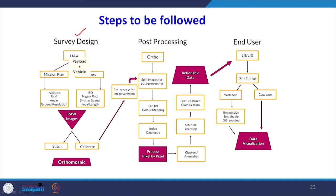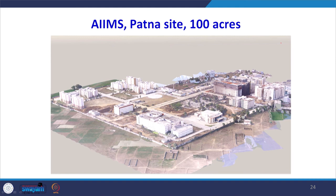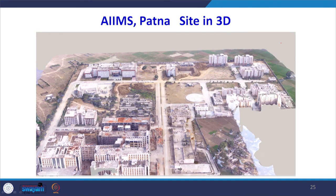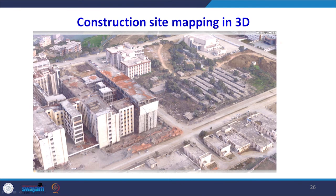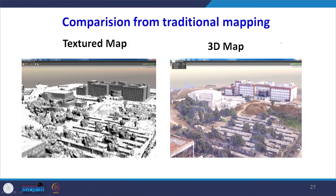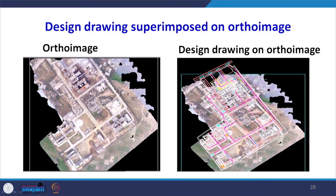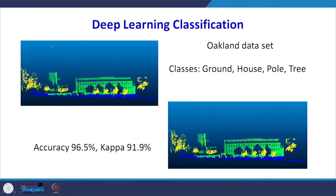The steps involved include survey and design, post-processing data, and data visualization. As an example from the Ames Patna site, a very large area has been scanned in 3D, a 3D model has been created from point cloud data, and construction progress can be monitored. A texture-based map can also be created from the 3D map. An ortho image can be superimposed on top to measure the actual deviation from the design drawing.